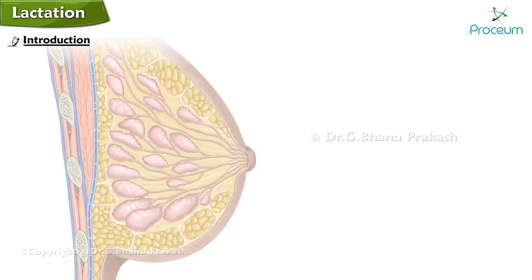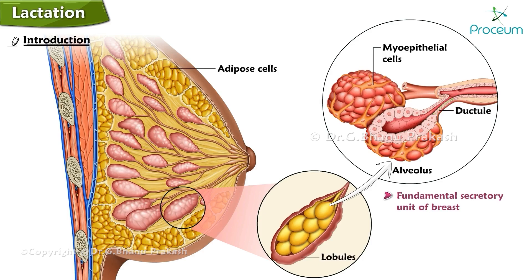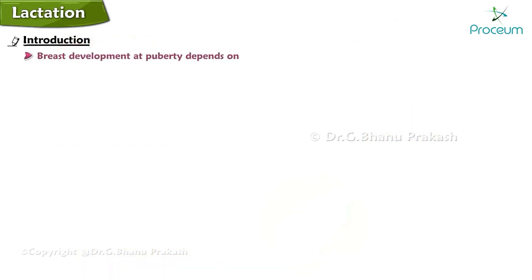The fundamental secretory unit of the breast is the alveolus, which is surrounded by contractile myoepithelial cells and adipose cells. These alveoli are organized into lobules, each of which drains into a ductule. A group of 15 to 20 ductules drain into a duct, which widens at the ampulla forming a small reservoir. The lactiferous duct carries the secretions to the outside.